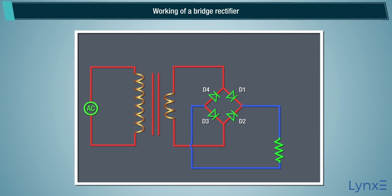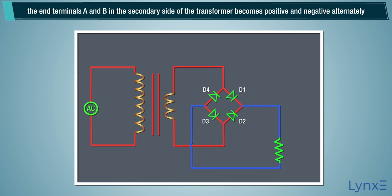Working of a Bridge Rectifier. When the AC voltage is applied to the input circuit, the end terminals A and B in the secondary side of the transformer becomes positive and negative alternately.